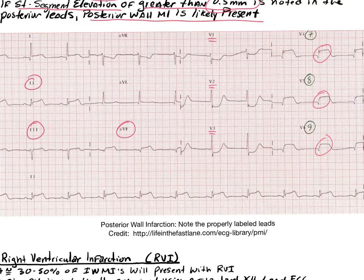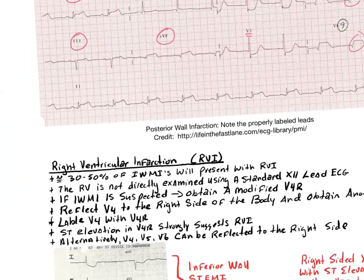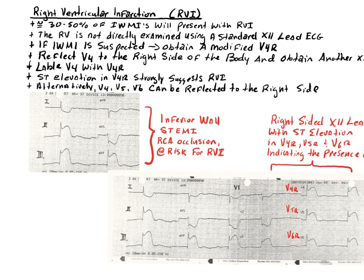The other special type of infarction is a right ventricular infarction, or RVI. About 30% to 50% of all inferior wall myocardial infarctions will present with an RVI — which should come as no surprise since it involves the same coronary artery.